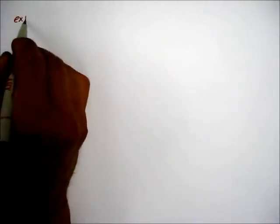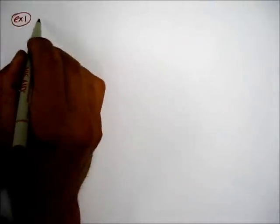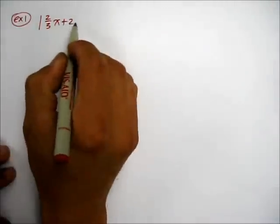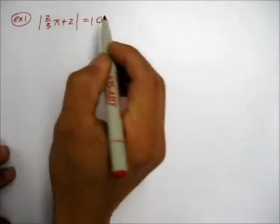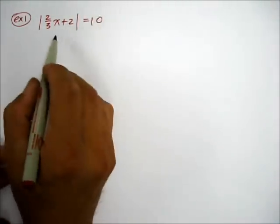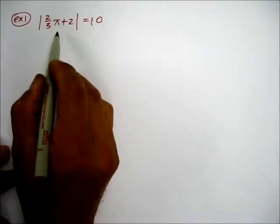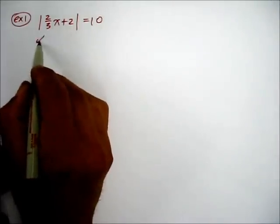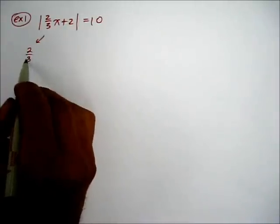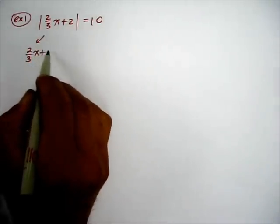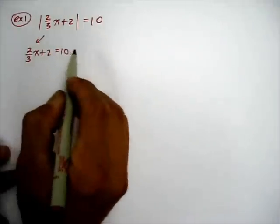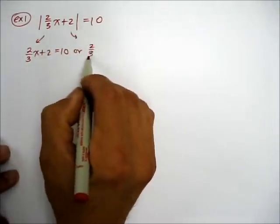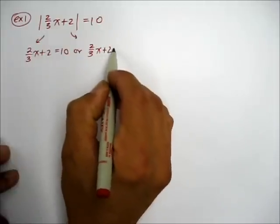Here's Example 1: absolute value of 2/3x + 2 is equal to 10. Absolute value implies there are two possible solutions. So in this case, you set it up as 2/3x + 2 = 10, or the other possibility is 2/3x + 2 = -10.